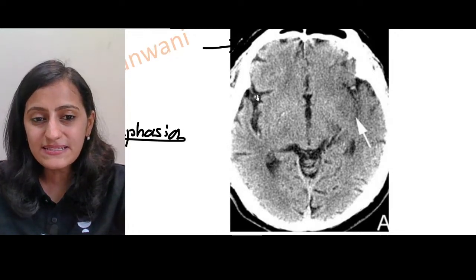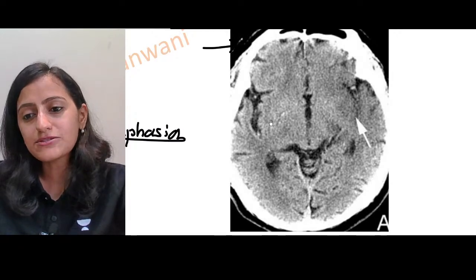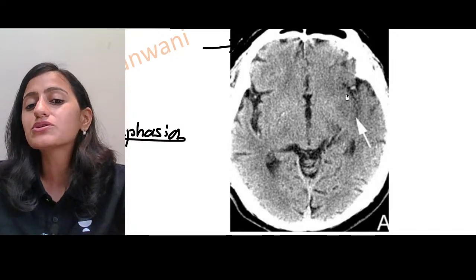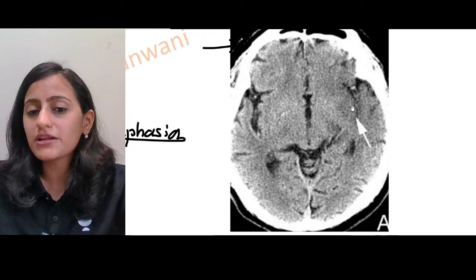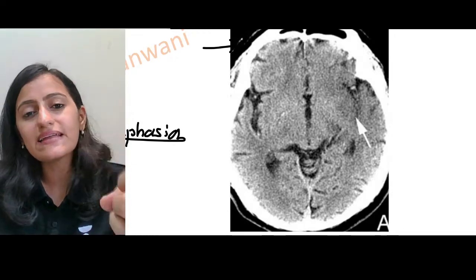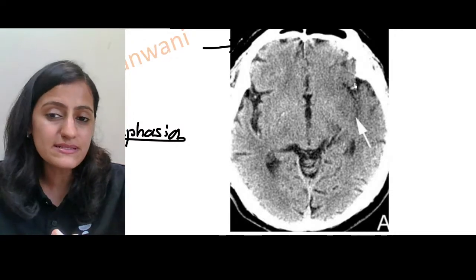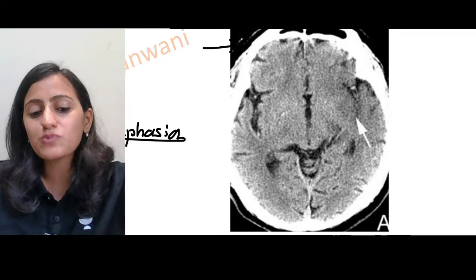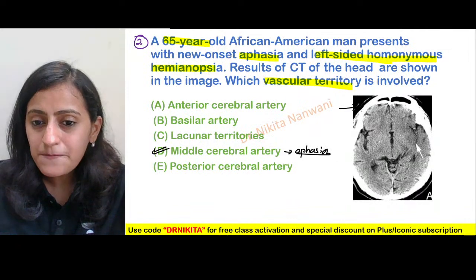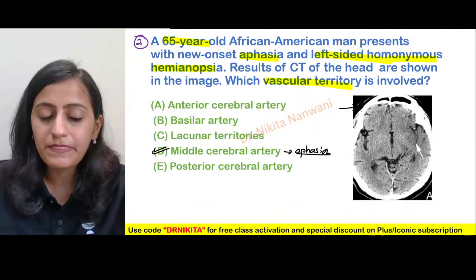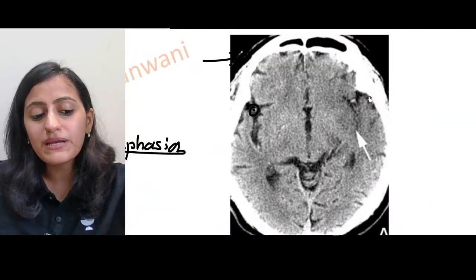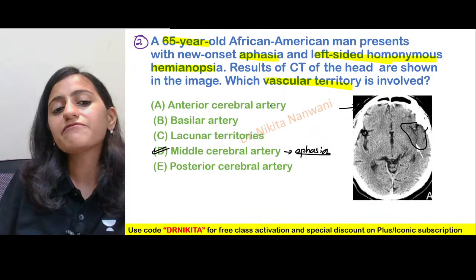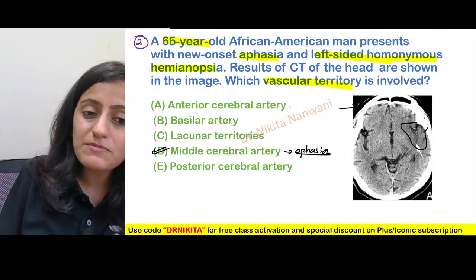The CT shows the sylvian fissure and surrounding insular cortex. There is hypodensity — the insular cortex is lost. This is the insular ribbon sign, or loss of insular ribbon. The infarct leads to cell death and edema, appearing hypodense on CT. This hypodensity surrounds the insular area, where the M3 segment of the middle cerebral artery runs in the sylvian fissure — confirming MCA infarct.